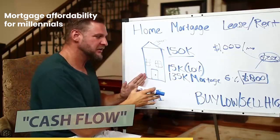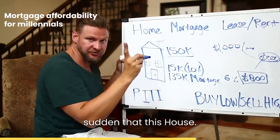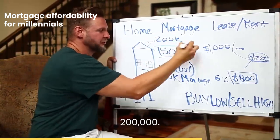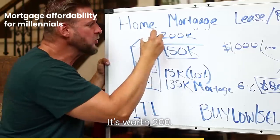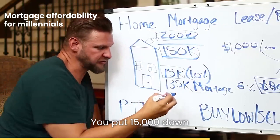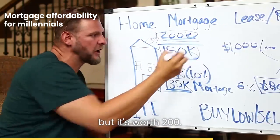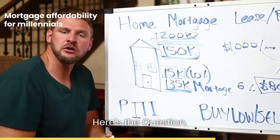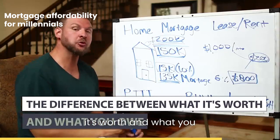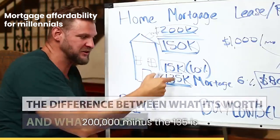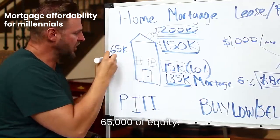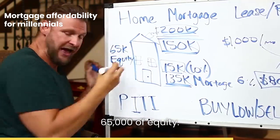So you buy a property — and let's say all of a sudden this house is worth two hundred thousand dollars. It's worth two hundred; you bought it for a hundred and fifty. You put fifteen thousand dollars down, you've got a mortgage for a hundred and thirty-five, but it's worth two hundred. How much equity does it have? The equity is the difference between what it's worth and what you owe. In this case, two hundred thousand minus the hundred and thirty-five is sixty-five thousand dollars of equity.